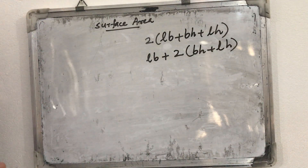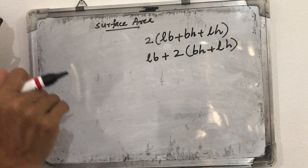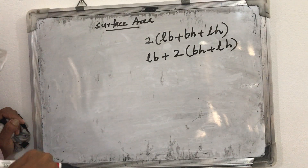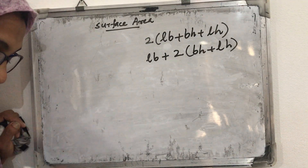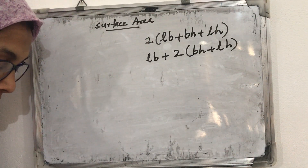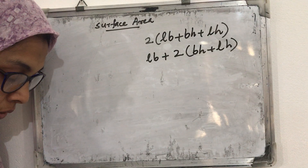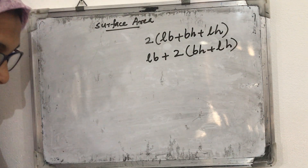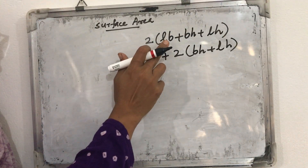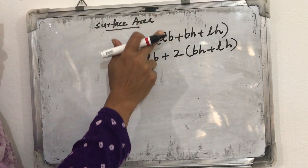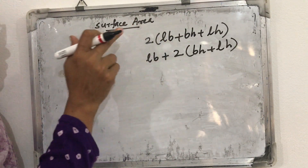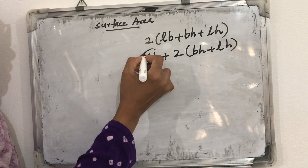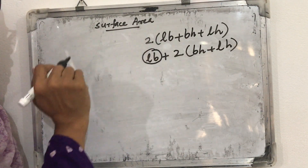According to the question, we decide which part to avoid. Here the question states the bottom surface need not be painted, so that part we avoid from the equation. Bottom surface and top surface are both LB. We avoid one bottom surface, leaving only 1LB. We can avoid that from the total surface area formula.